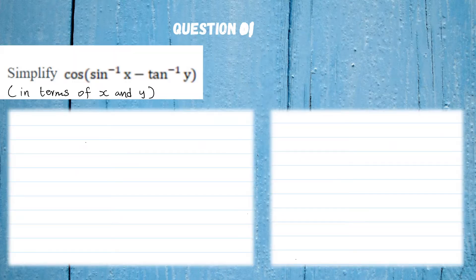Let's take a look at question one. It says simplify the given cos(arcsin x − arctan y) in terms of x and y. This is a little bit challenging because most students might not know how to first approach it. In this session you'll be able to know how to solve questions like this — I'll show you two examples, then we'll look at the last one.